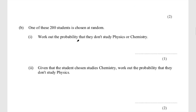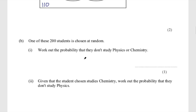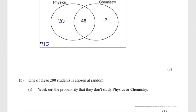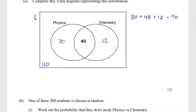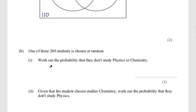Part B: one of these 200 students is chosen at random. Work out the probability they don't study physics or chemistry. We've already answered that — 110 students don't study physics or chemistry. So this is going to be 110 out of 200, which simplifies by dividing by 10 to give 11 over 20.